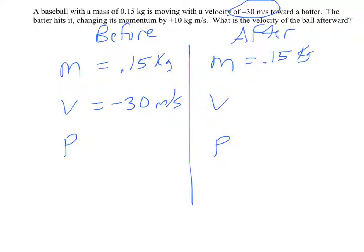Changing its momentum by 10. So let's just start off by figuring out how much momentum does this ball have to begin with? So negative 30 times 0.15, it's beginning with negative 4.5 kilogram meters per second. So the batter hit it and caused it to gain 10 kilogram meters per second.